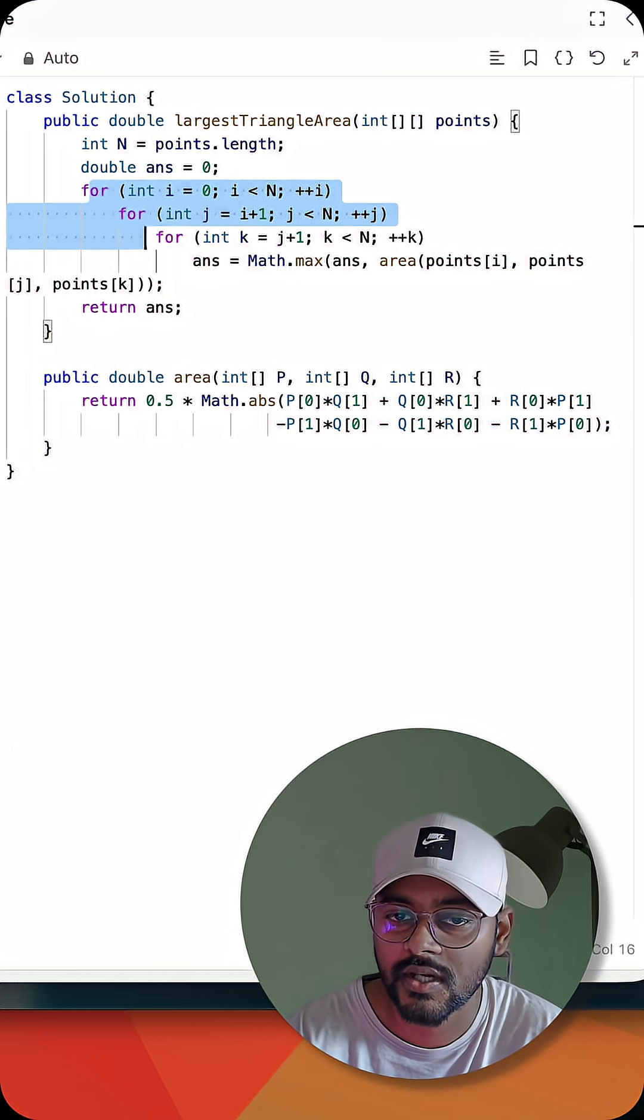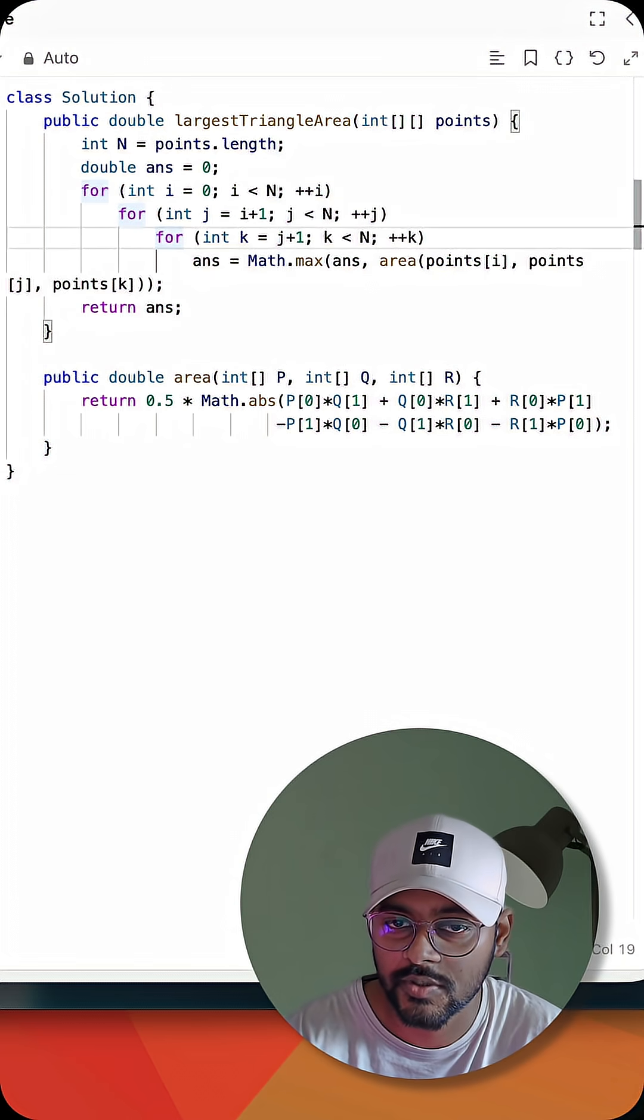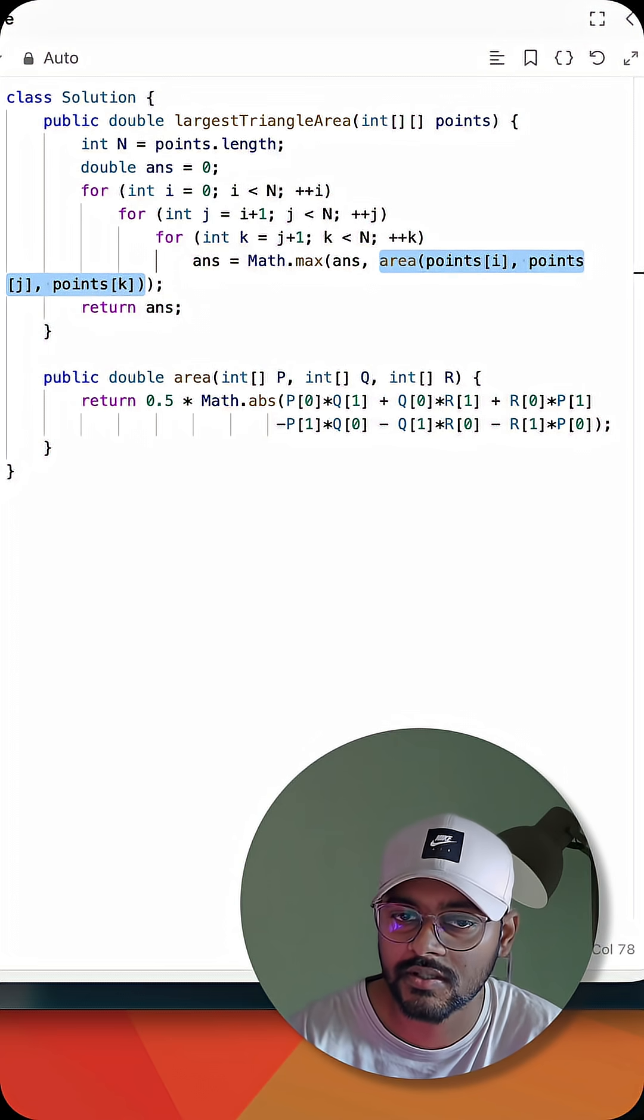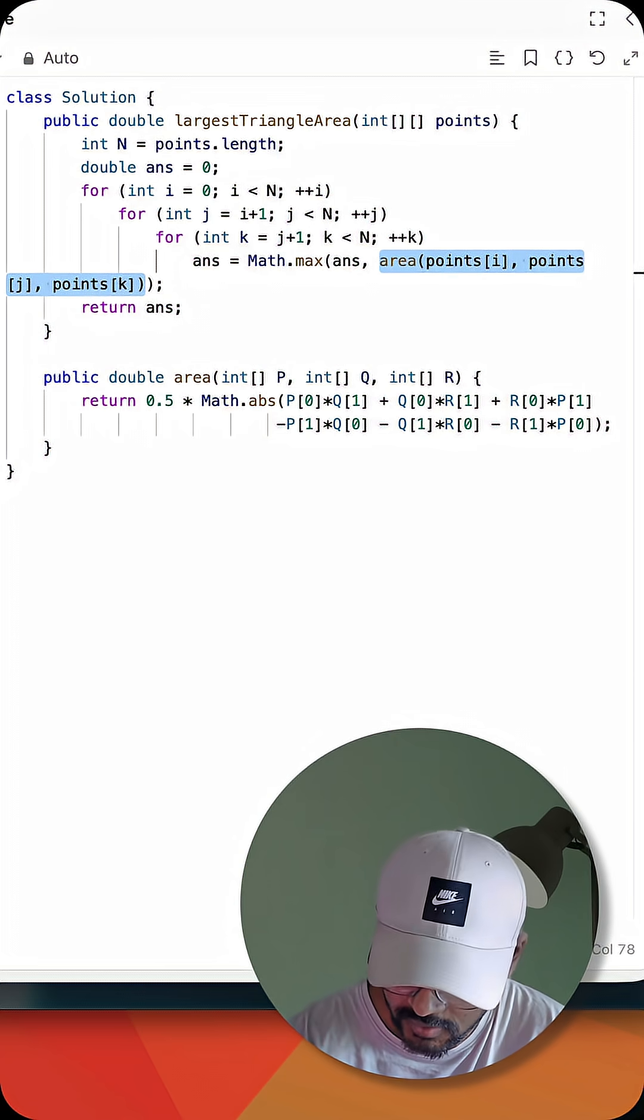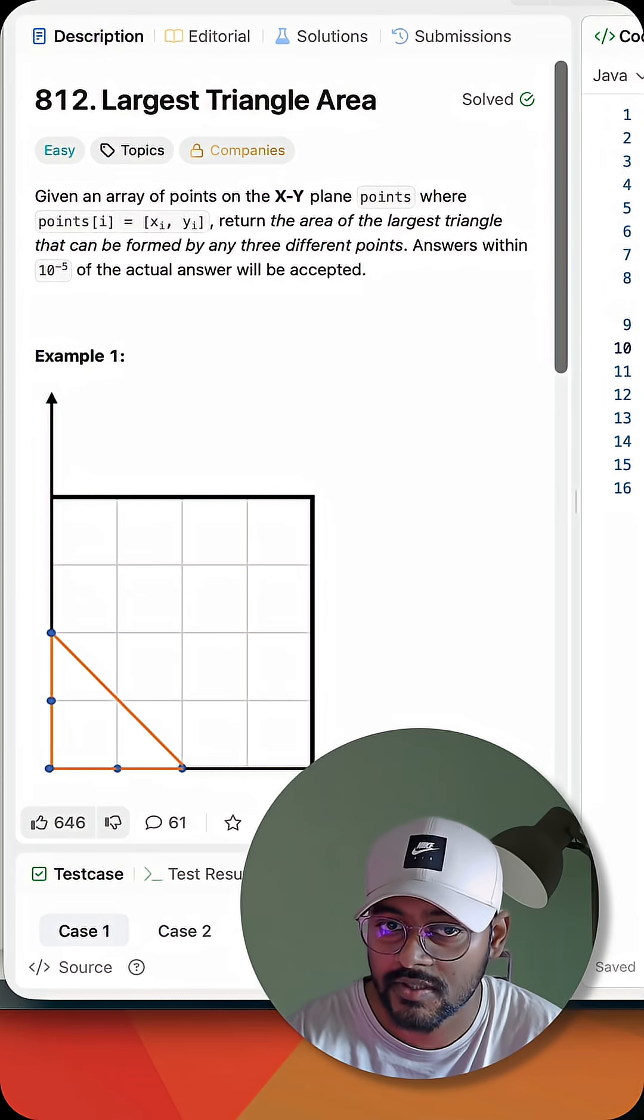If we check the code, we are checking every single point with nested for loops for every single possibility: point A, point B, point C. Then if we have three points, we can get the area of this triangle by applying Shoelace formula or just solving the determinant directly and we can get the answer. Now do submit this problem on LeetCode.